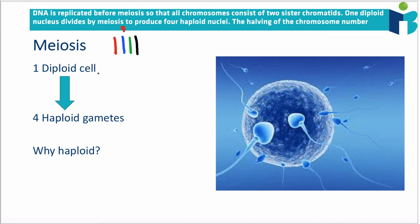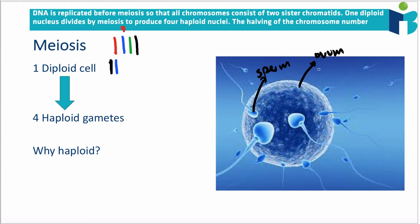A diploid cell has two of every chromosome type — one from our mom and one from our dad. These are homologous chromosomes. Meiosis is the process of forming reproductive gametes, which are cells that can join with other gametes to form new organisms. In humans we have sperm and the ovum, which can come together from two different individuals to form an embryo. Meiosis takes a diploid cell and forms haploid gametes, where you have just one of every chromosome and no longer a homologous pair.